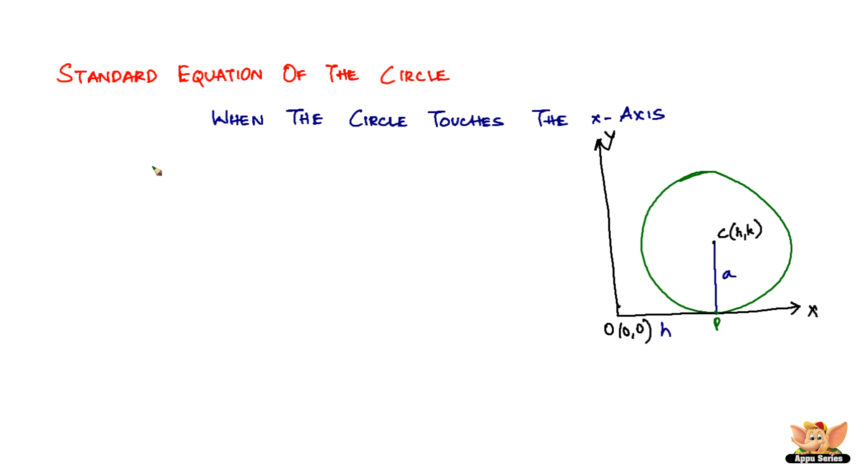So majorly what happens is k becomes equal to a. That is exactly what happens when the circle touches the x-axis. k and a become equal.